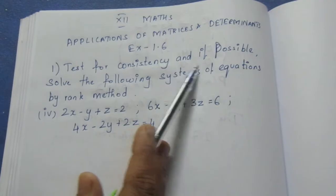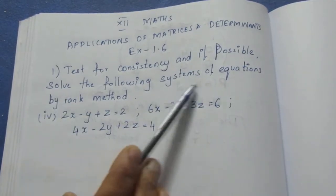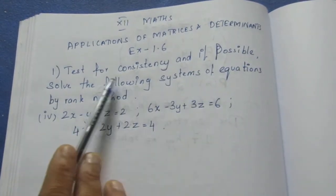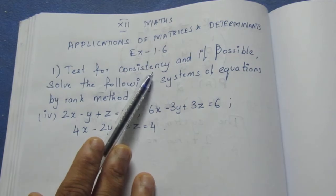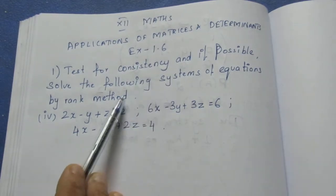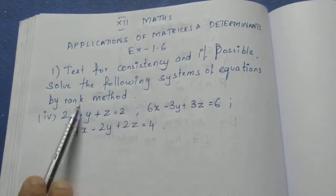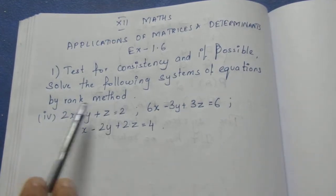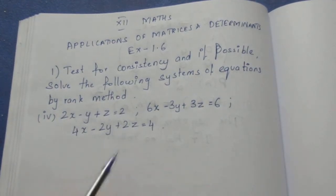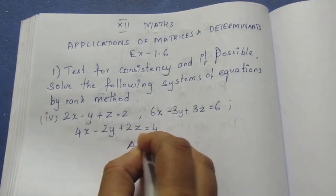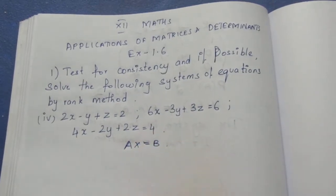Test for consistency and if possible solve the following equations by rank method. If consistency is not there, xyz value is not there. How do you use rank method? In other words, we will take Ax equals B in the form we will solve.